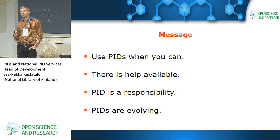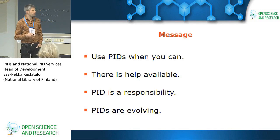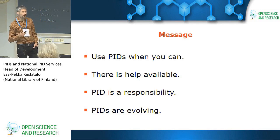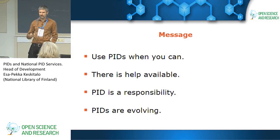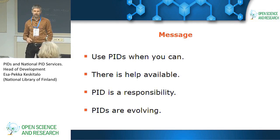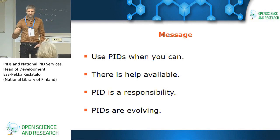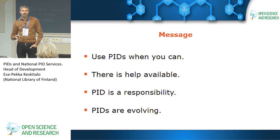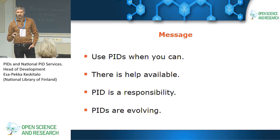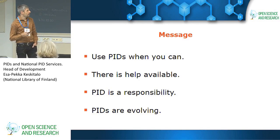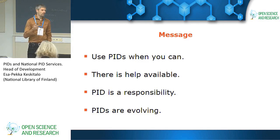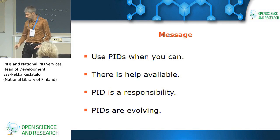We are sure we can accommodate our services to new kinds of use cases. And I remind you that a persistent identifier is supposed to be persistent, and it will not stay persistent as such. It's not a Rosetta Stone that you can bury in sand and wait for 500 years and take back, but it needs active involvement from the researcher or the research organisation. Also, identifiers are evolving, so if there's something that doesn't quite fit your needs just now, just let us know and we can try to do something about that.